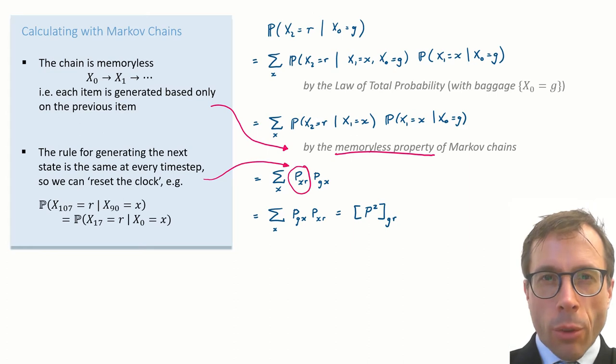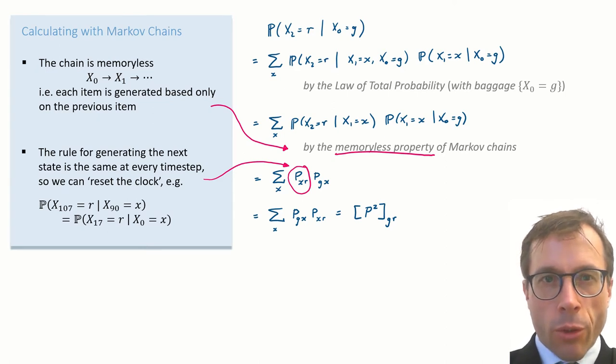The next key step is something that's almost too subtle to spot here. The rule for generating the next state is the same at every time step, which is why we use the same P matrix for the transition from x1 to x2 as for x0 to x1.